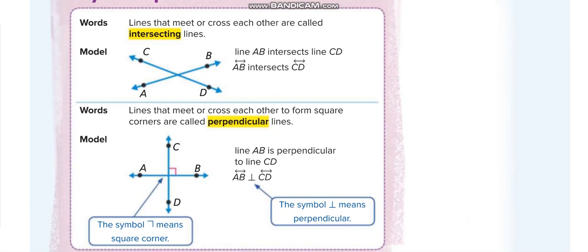Next we have intersecting and perpendicular lines. With parallel lines, lines are not crossing each other, but with intersecting lines, the lines do cross each other. When two lines cross each other, we call them intersecting lines. We write: line AB intersects line CD, using the small line symbol.